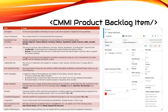Size is used to estimate the amount of work required to complete a requirement using any unit of measurement your team prefers — hours are a common choice. Original Estimate is the amount of estimated work required to complete a task; typically this field doesn't change after it is assigned. Start and Finish Date are the target dates for when work will start or finish, and these fields are filled in by Microsoft Project when used for scheduling.